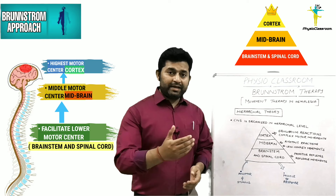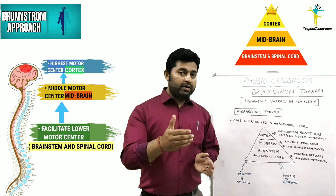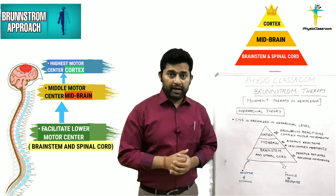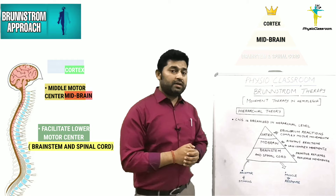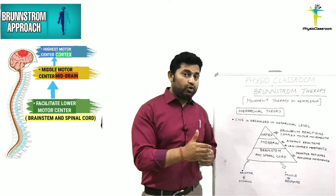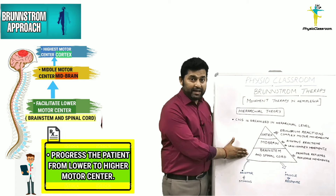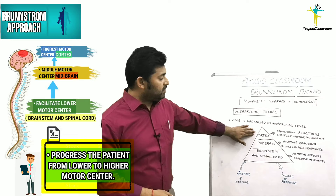In this introductory video on Brunnstrom therapy, we have tried to understand the important concepts used in treating hemiplegia patients. In summary, Brunnstrom talks about development in reverse that happens when an individual suffers a stroke or insult to the brain. In such a situation, there is loss of higher motor control centers, so the therapist should first try to facilitate movements at the level of the brainstem and spinal cord, then gradually progress the patient to higher levels of motor control.